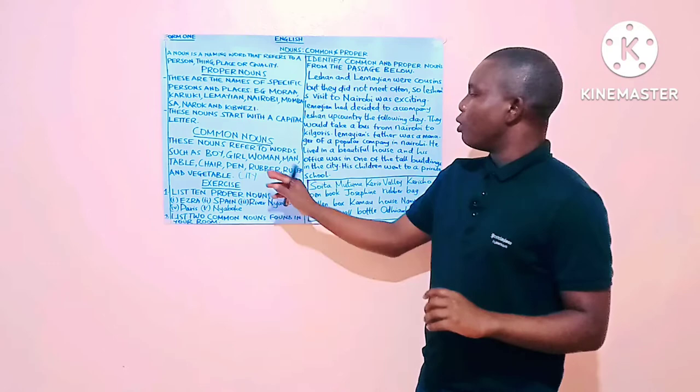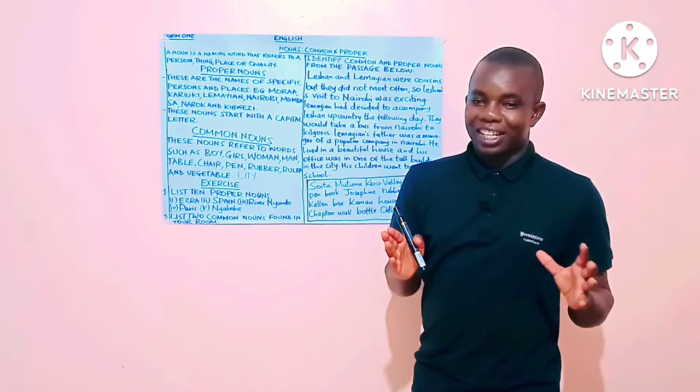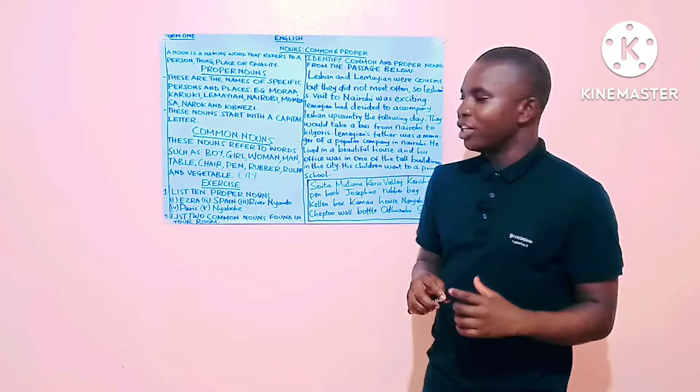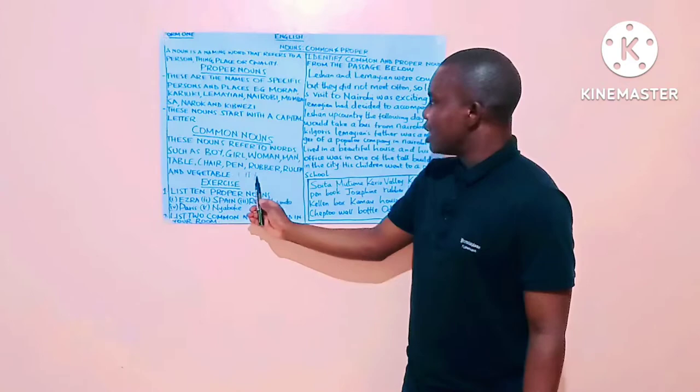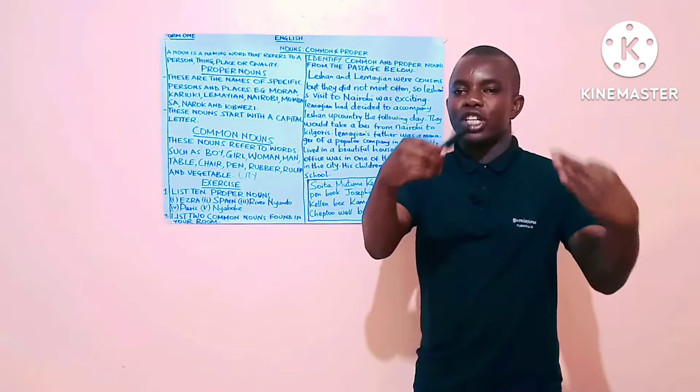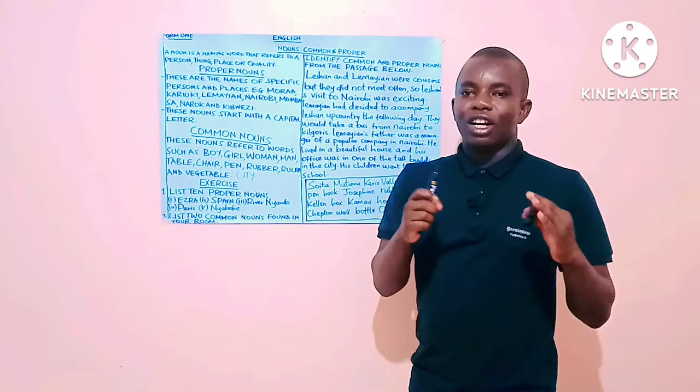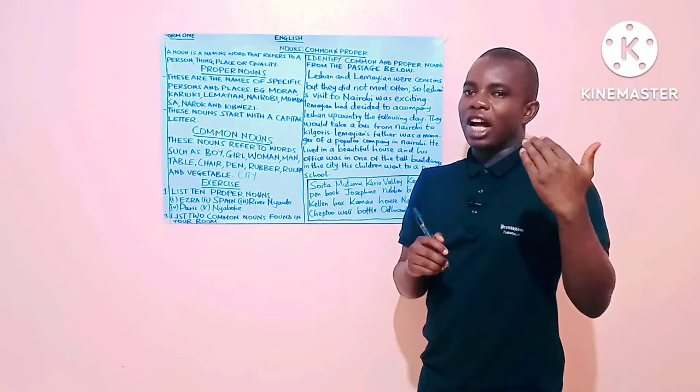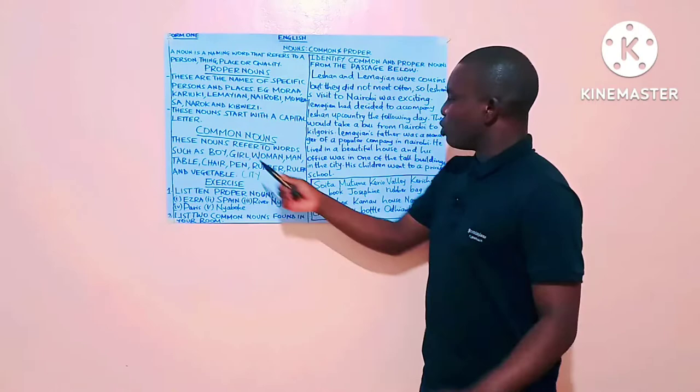So, the word city is general because we can have very many cities, even in Kenya. But now when we go down to name a city, it will be specific. For example, the common noun in this case will be the city. And when we are specific, when we ask the question, which city, then we can get an answer like Nairobi.